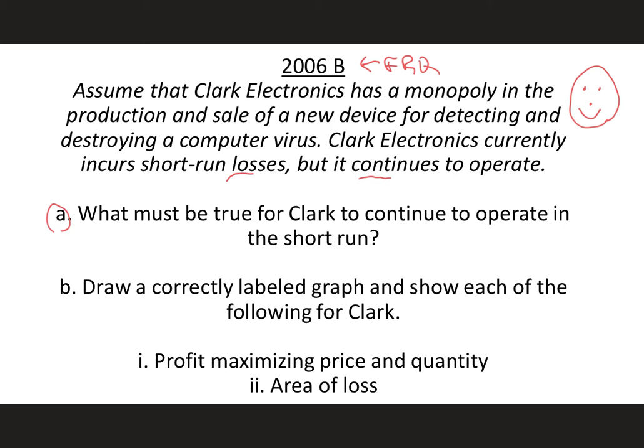The very first part of this question, what must be true for Clark to continue to operate in the short run? The same shutdown rule applies in monopoly as it does in perfect competition. So in order to be producing, Clark has to have a price that is greater than or equal to minimum AVC. It's not any different than in perfect competition. If the price were to fall below minimum AVC, then Clark in the short run should shut down. He will produce, even with a loss, as long as price is greater than minimum AVC, at that price Clark is able to cover some of his variable costs and some of his fixed costs, or at least all of his variable costs if the price is exactly equal to minimum AVC.